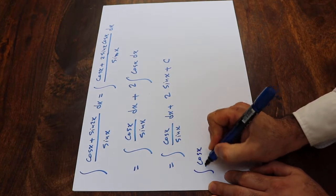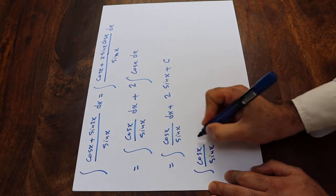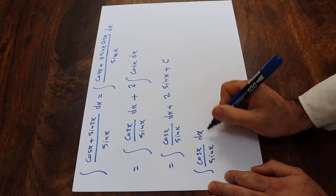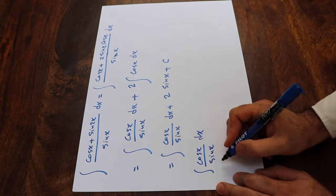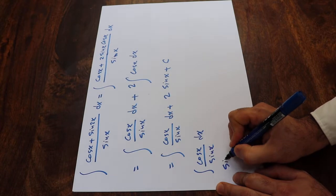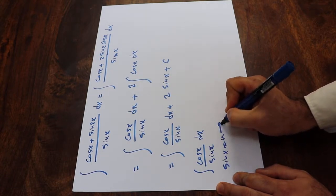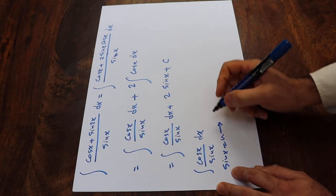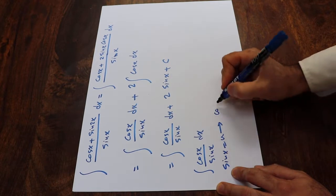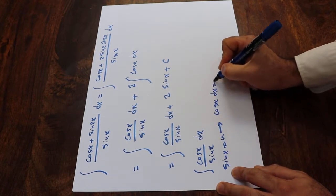Integral of cosine x divided by sine x dx. To solve this integral, you need to use the substitution rule. If you define sine x as u, and if you take the derivative from each side of this equation, this will be equal to derivative of sine x is cosine x, dx will be equal to du.